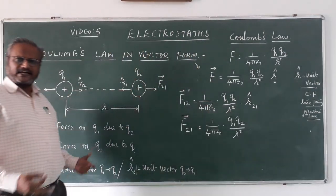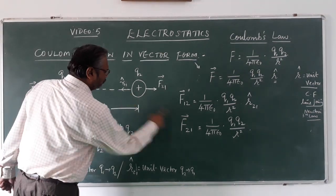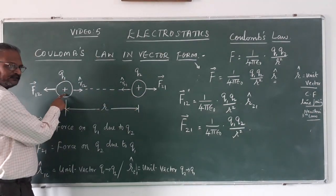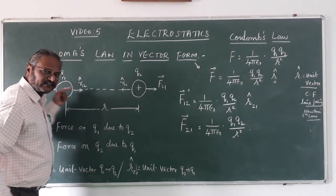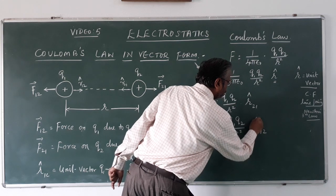And which is 1 upon 4πε₀ into charges are same q₁q₂ upon r² into, now what about the direction of the unit vector? You see force on 2 due to 1, and you see this is the direction of the unit vector. So I can write r̂₁₂.